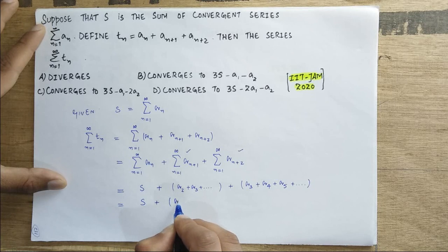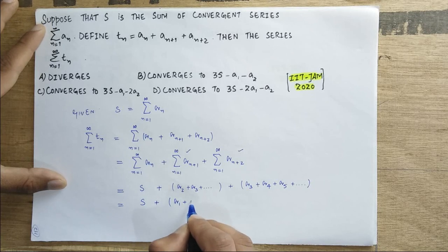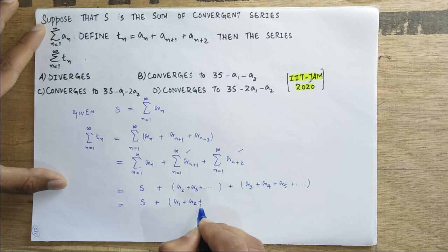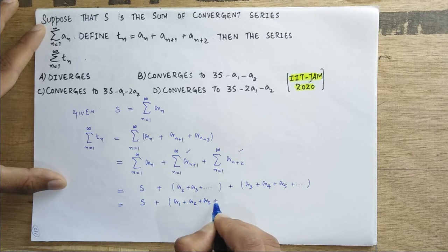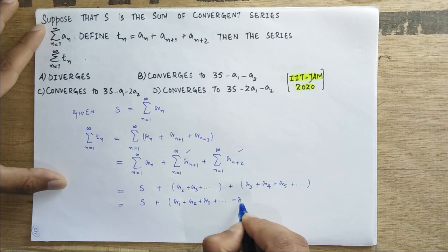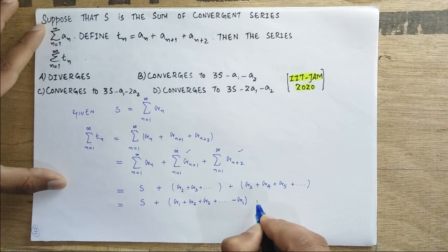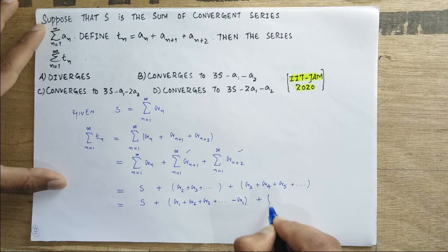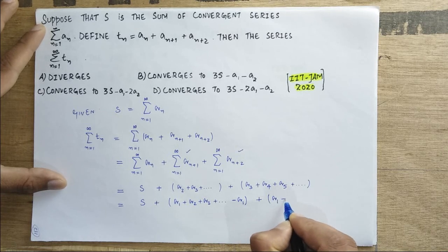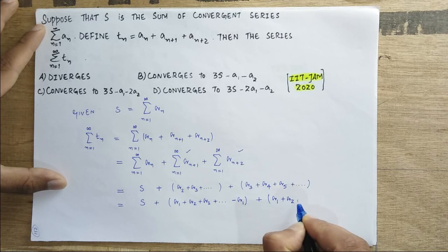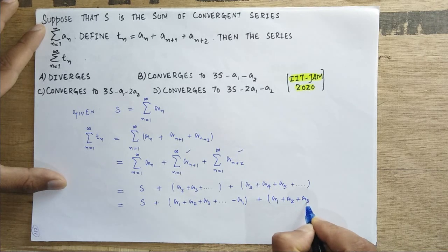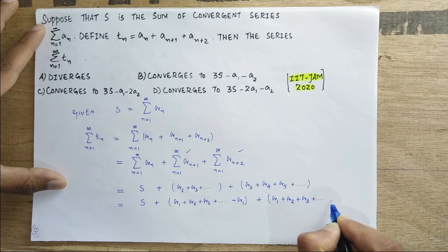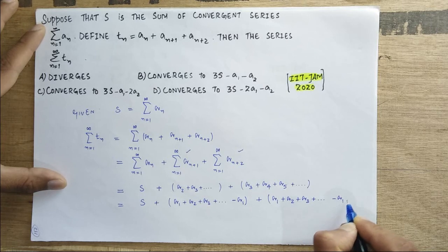If I add the terms a_1 plus a_2 plus a_3 plus so on. The term is a_1, subtract and add. This is a_1, a_2, a_3, plus a_1 and a_2.